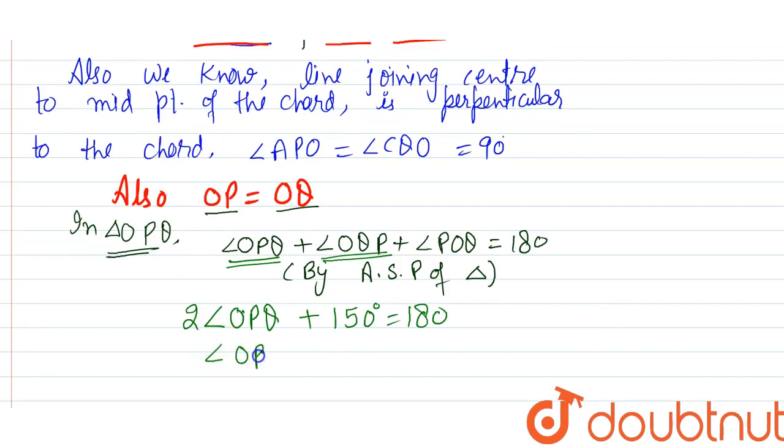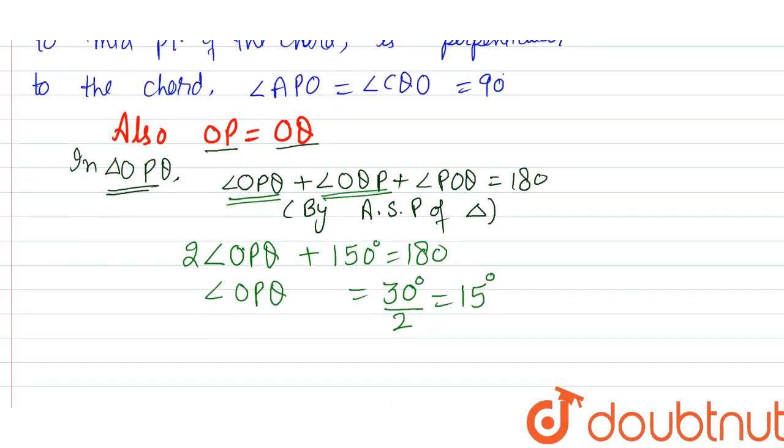Twice of OPQ plus POQ is given 150 degrees in the question is equals to 180 degrees. So, angle OPQ, this 150 will be in minus 30 degrees. Two in division. So, it will come out 15 degrees.